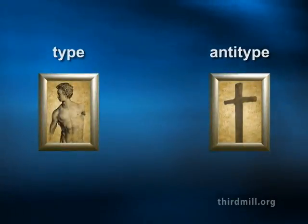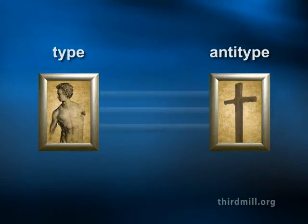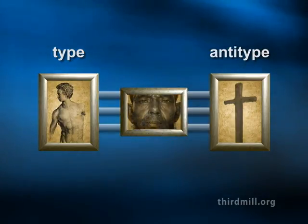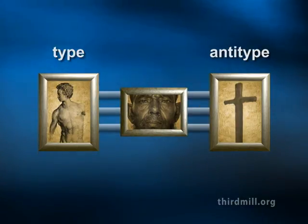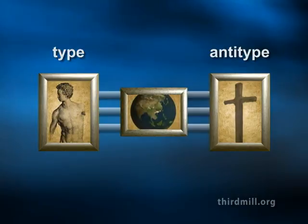For example, consider again Paul's example of Adam as a type of Christ in Romans chapter 5 verse 14. Paul did not compare the fact that both men had hair. He did not draw attention to the fact that both had two eyes and two ears. Instead, Paul noted this typology because he was comparing the theological significances of Adam and Christ. Paul's comparison was based on the observation that both men had massive impacts on the status of the people identified with them.